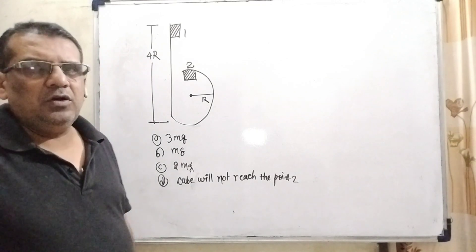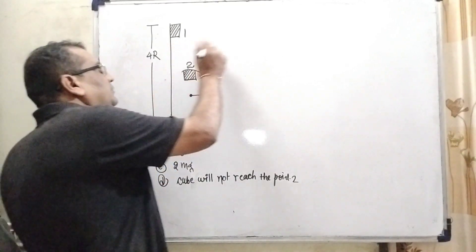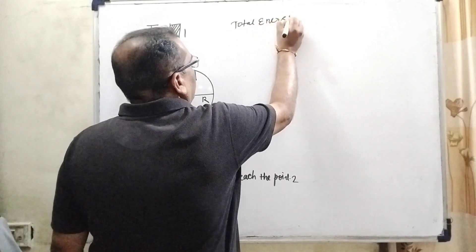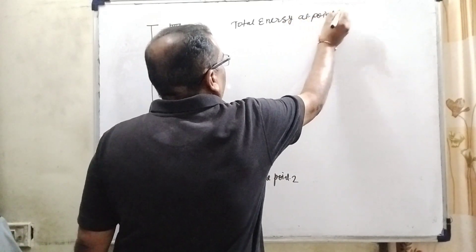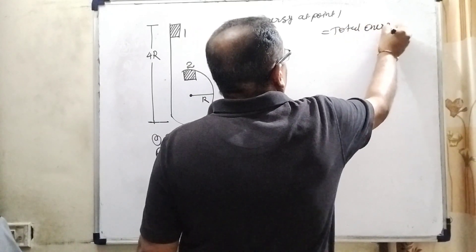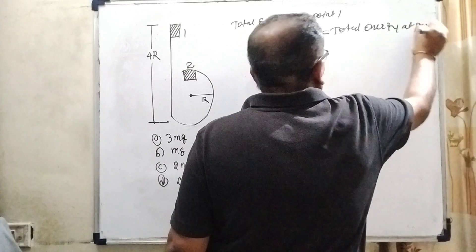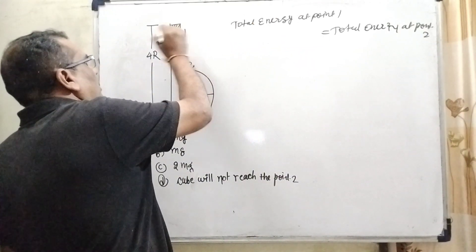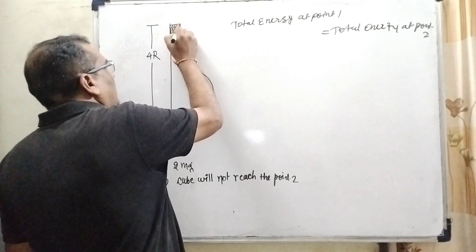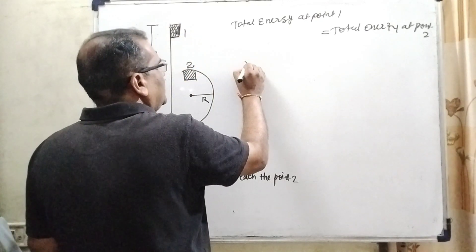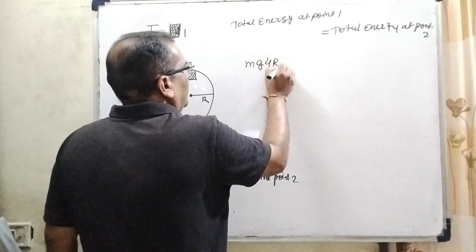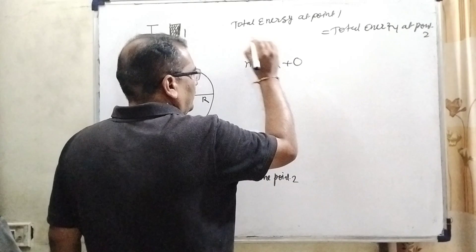First of all, we have using laws of conservation of energy at the point 1. Here, total energy at point 1 is equal to total energy at point 2. So, here we have found out the total energy here. What is energy? It is this energy is accumulated due to the position means potential energy mg. And what is the height from the ground? That is 4R. And there is no any kinetic energy. So, therefore 0.